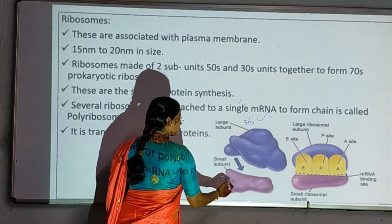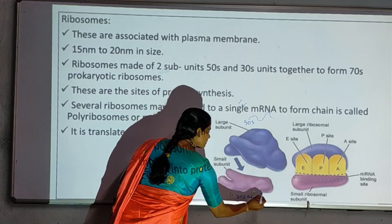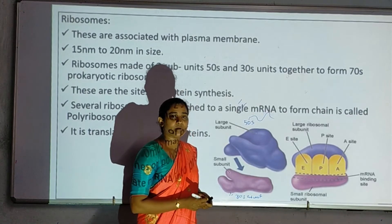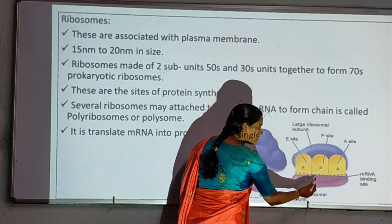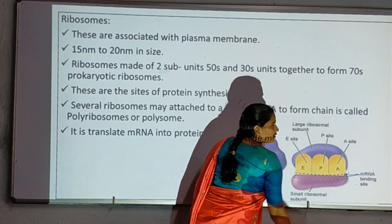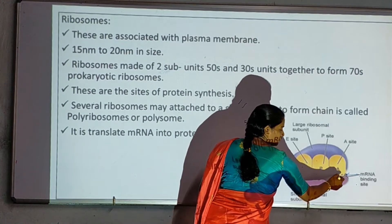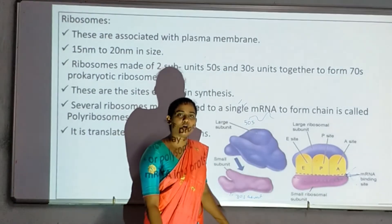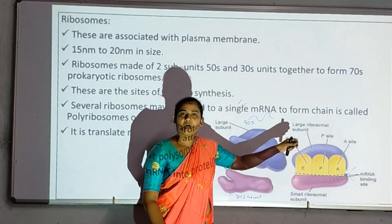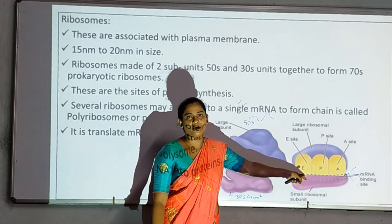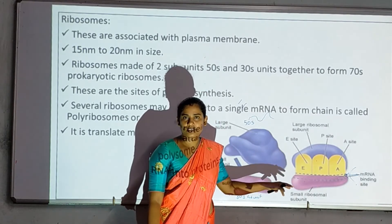The ribosome has a 50S subunit and a 30S subunit. The polyribosome has three sites: the E site, P site, and A site. The mRNA binding site is present on the ribosome. Multiple ribosomes bind to the mRNA strand to form the polyribosome, which is used for protein synthesis.